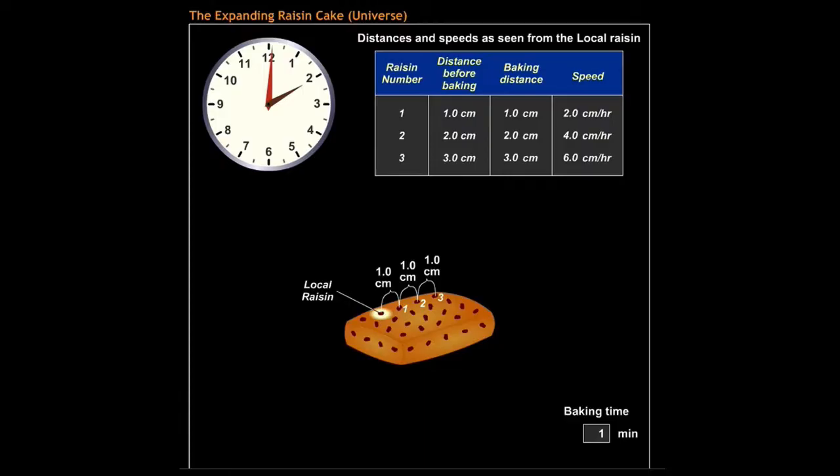But what would you see if you lived in the local raisin? Notice that raisins one, two, and three start at distances from you of one, two, and three centimeters, respectively.